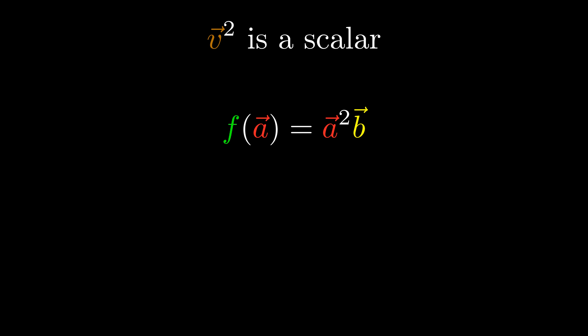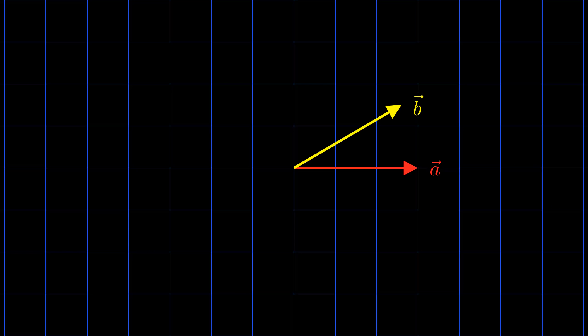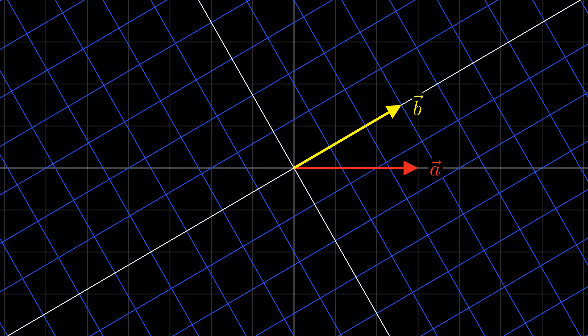If we think about the effect of this linear transformation on A, the result is just a scalar multiple of B, because A squared is a scalar. Dropping the scalar factor, we see that the linear transformation brings A to B. It's important to remember this only works in two dimensions, although in higher dimensions we can often consider the two-dimensional subspace containing A and B. So: multiplying a vector by the product AB is a linear transformation that brings A to B. The simplest guess is the correct one — it is the rotation that brings A to B, as we saw in the original video.